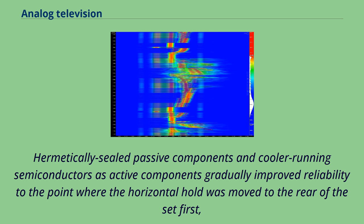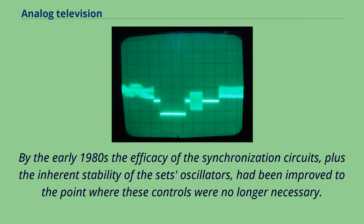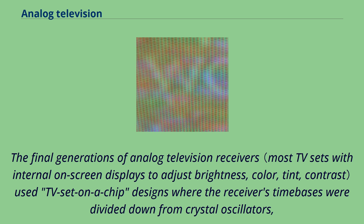The final generations of analog television receivers used TV-on-a-chip designs where the receiver's time bases were divided down from crystal oscillators, usually based on the 3.58 MHz NTSC color burst reference. PAL and SECAM receivers were similar though operating at different frequencies. With these sets, adjustment of the free-running frequency of either sweep oscillator was either physically impossible or possibly through a hidden service mode accessible through the on-screen display menu system.